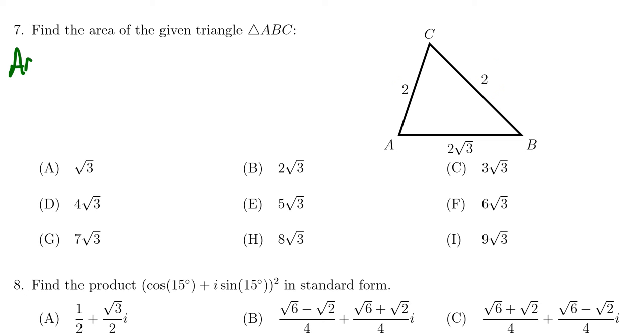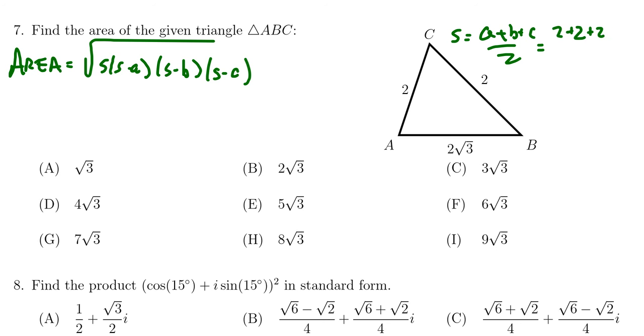So the area here is going to equal the square root of s times s minus a times s minus b times s minus c, where s is the semi-perimeter. It's the sum of the three sides divided by 2. So we end up with 2 plus 2 plus 2 times the square root of 3 over 2. This gives us 4 plus 2 root 3 over 2, or in other words, 2 plus the square root of 3. That's our s value there.